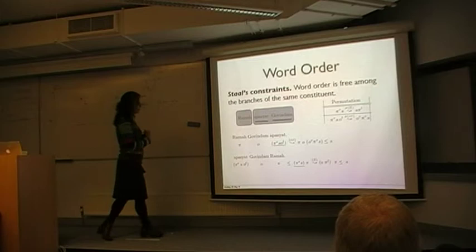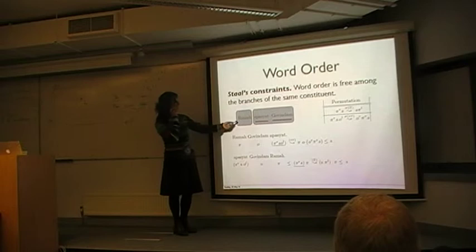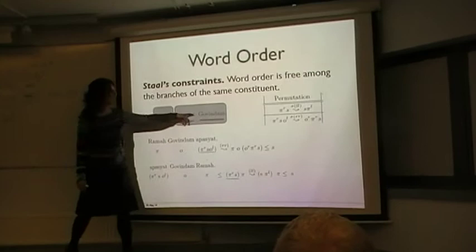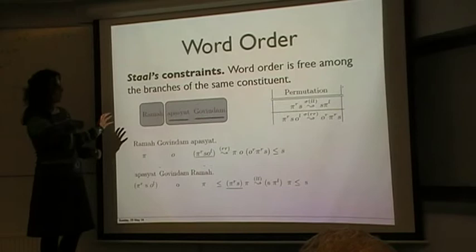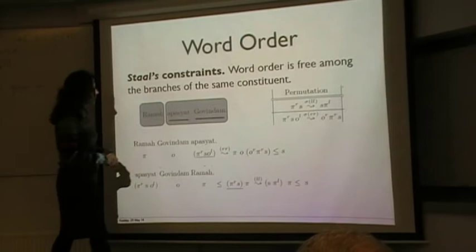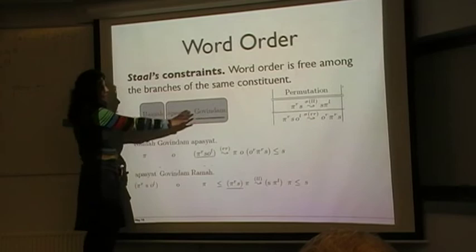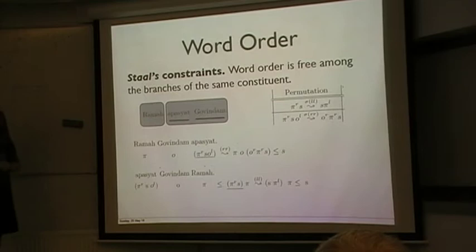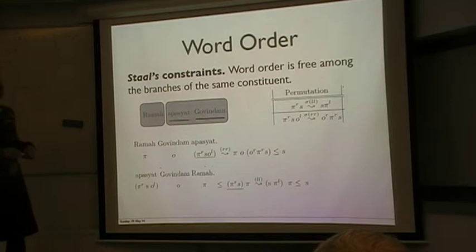So, Staal's one of the first people who said this is absolutely not true. And word order is only free among the branches of the same constituent. So now, for example, if you have a sentence like Rama Apasyat Govindam, which is Rama saw Govindam. Although this H and the M are the cases. In this case nominative and dative. And you know that Rama is this subject and Govindam is the object. Not all permutations are possible. Normally you have six possible permutations. But only four of them are allowed. Why? Because Rama is one constituent. Apasyat Govindam is the second constituent. Rama can go from before this constituent to after it. And Apasyat and Govindam can also permute between themselves. So it's never the case that Rama can actually insert itself between these two things, for example.